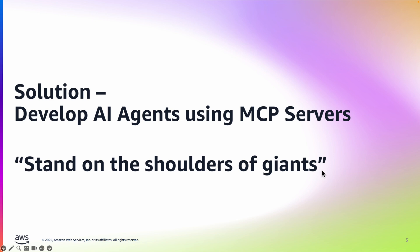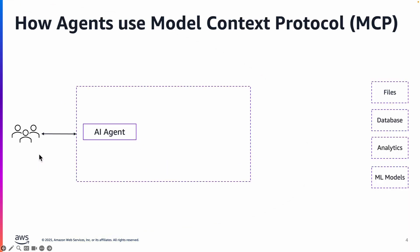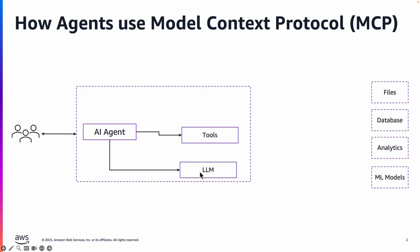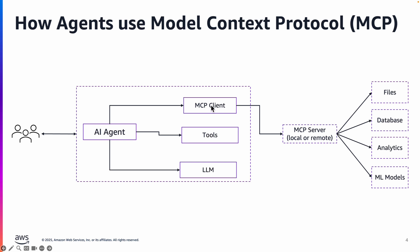The idea is to stand on the shoulders of giants — that is your teammates who may have already built an MCP server. So let's look at this situation where the user wants to use an AI agent, and the AI agent needs to query a bunch of files, databases, analytics engines, and even invoke ML models. You pass a large language model and you pass the tools, but these may not have access or the understanding of invoking all these data sources. So the solution is that you have an MCP server that can actually query all of these data sources. You use an MCP client that works on behalf of the MCP server with the agent, and the MCP client exposes a bunch of tools that are passed to the AI agent so that the large language model and AI agent can invoke the right tools at the right time.